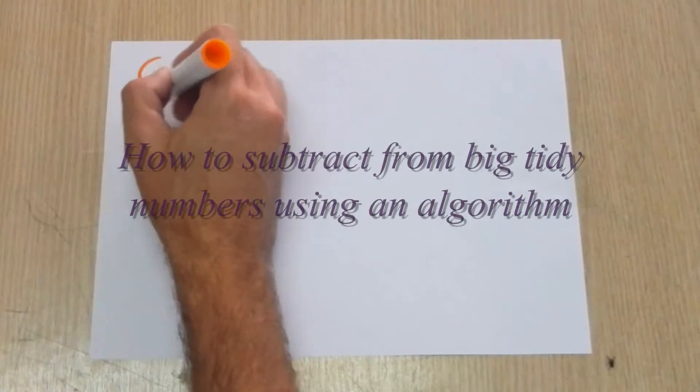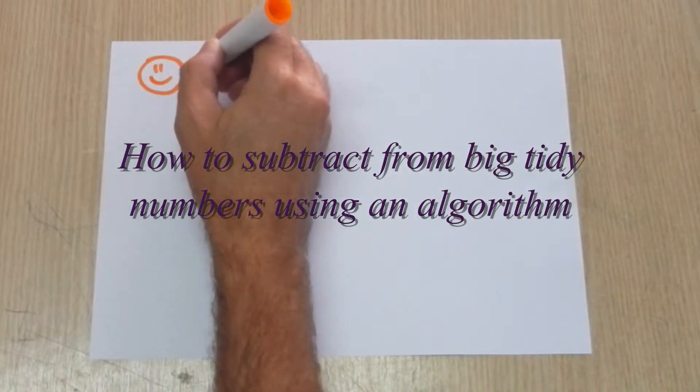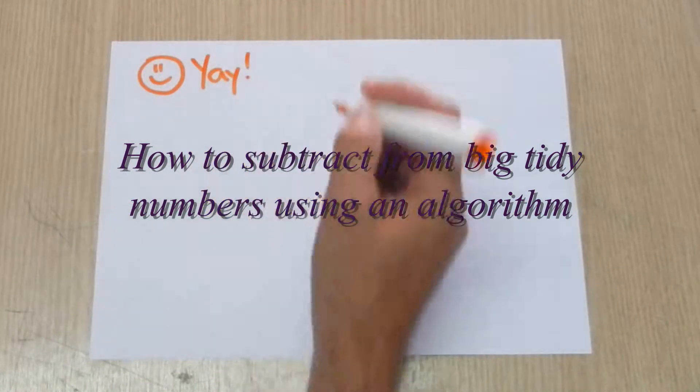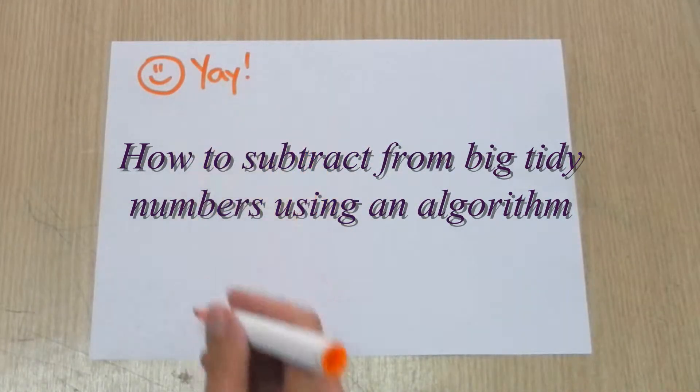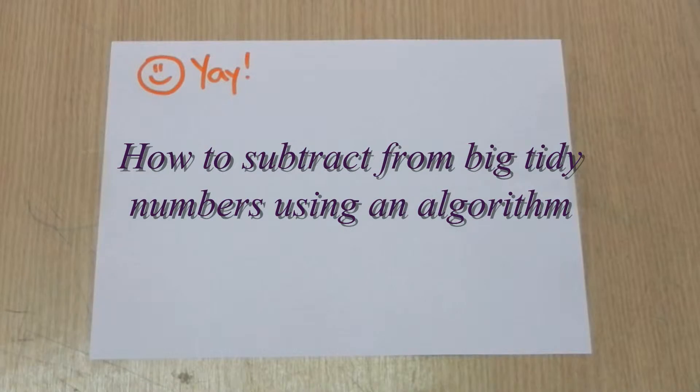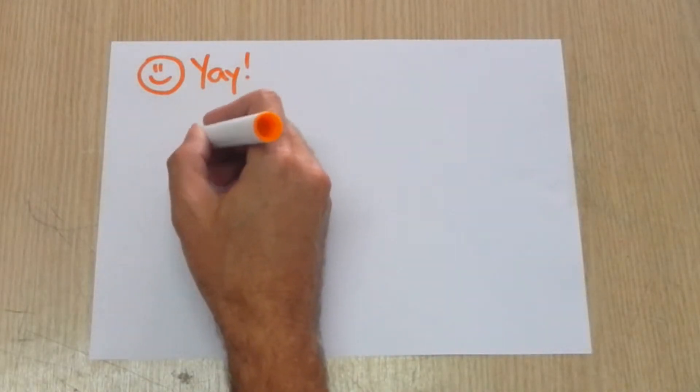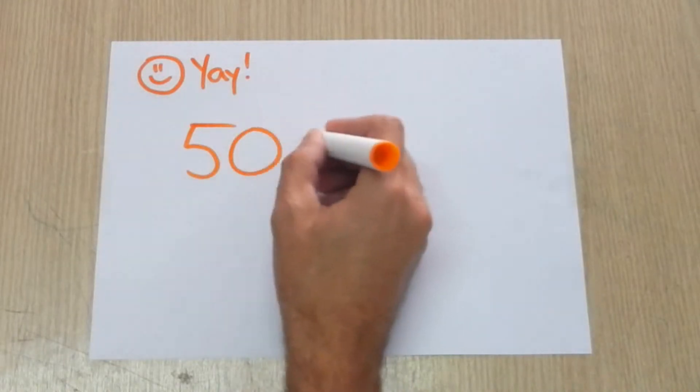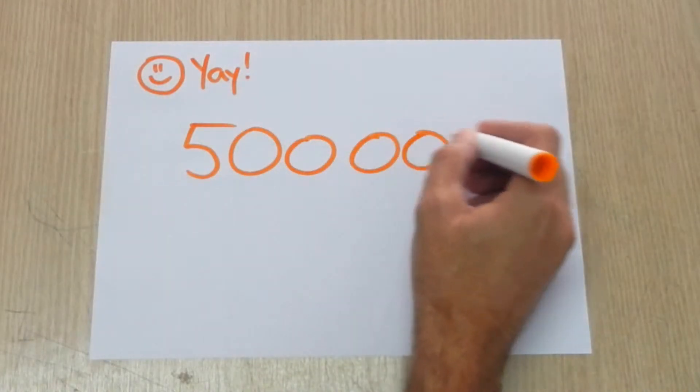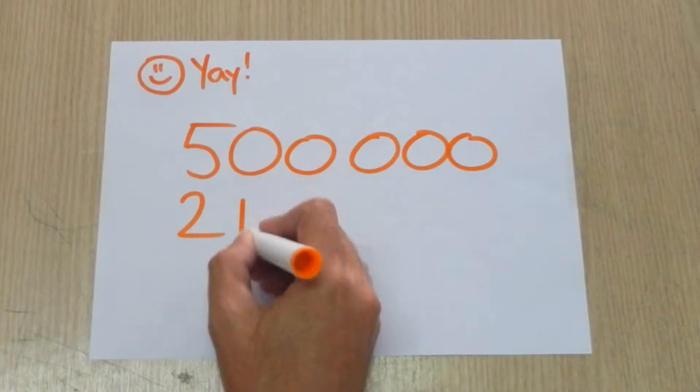Welcome to the magnificent world of maths, where we will teach you how to subtract numbers like 63,215 from numbers like 80,000. Here is an example: 500,000 take away 213,895.